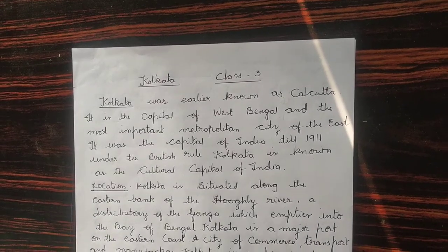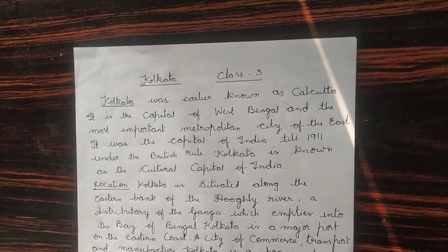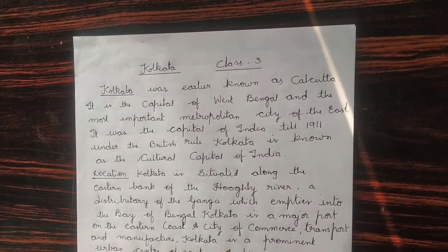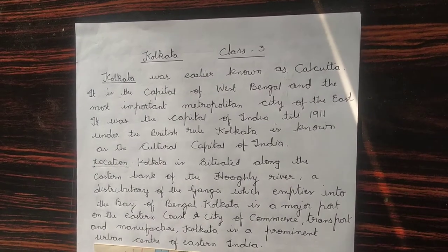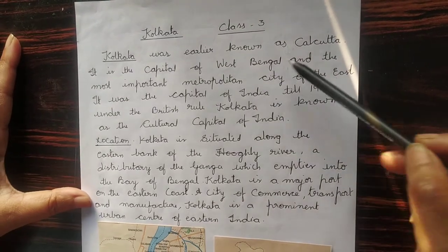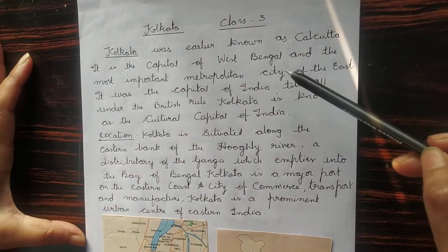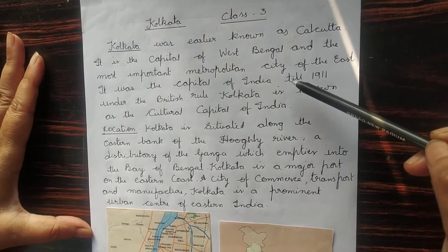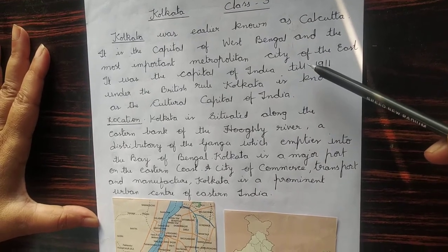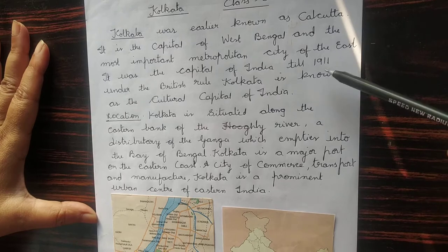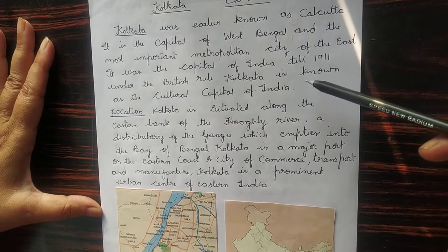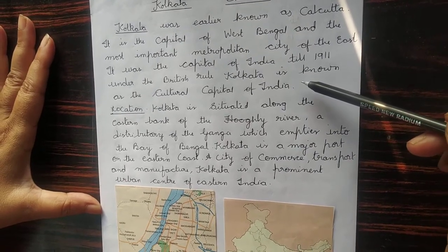Good morning children, this is Aruna Rajputra with today's social studies topic: Kolkata, for class 3 CBSE children. Kolkata was earlier known as Calcutta. It is the capital of West Bengal and the most important metropolitan city of the east. It was the capital of India till 1911 under the British rule. Kolkata is known as the cultural capital of India.